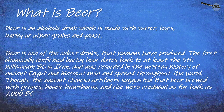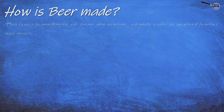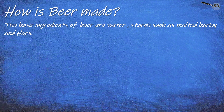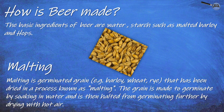Beer spread throughout the world, though ancient Chinese artifacts suggested that beer brewed with grapes, honey, hawthorns, and rice were produced as far back as 7000 BC. The basic ingredients of beer are water, malted barley, and hops.